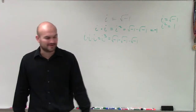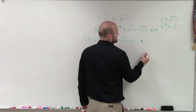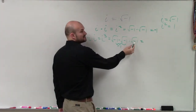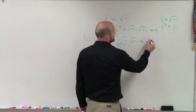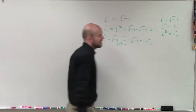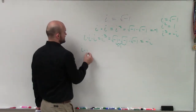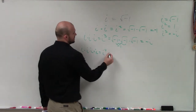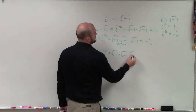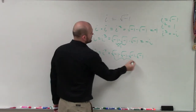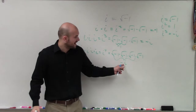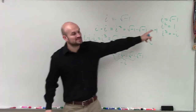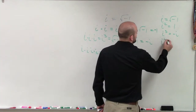Square root of negative 1 times square root of negative 1 is negative 1. So this equals negative 1 times i, which produces negative i. Therefore i cubed equals negative i. Then i to the fourth equals i times i times i times i, which equals the square root of negative 1 four times. We know all of that equals negative i times another i, giving negative i squared. Since i squared equals negative 1, negative times negative 1 is positive 1. So i to the fourth equals 1.